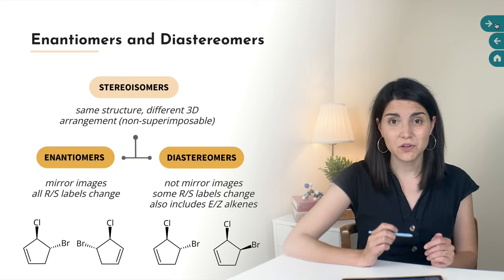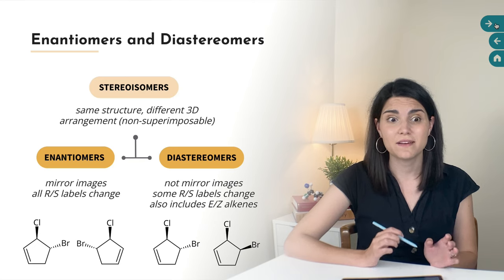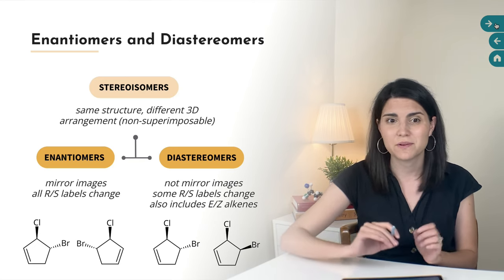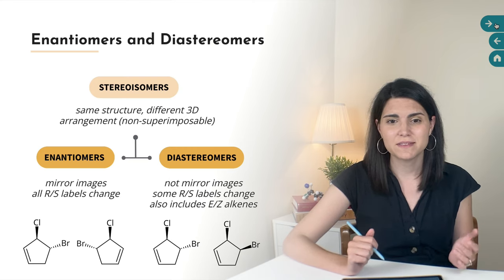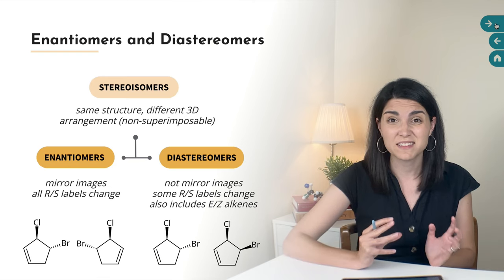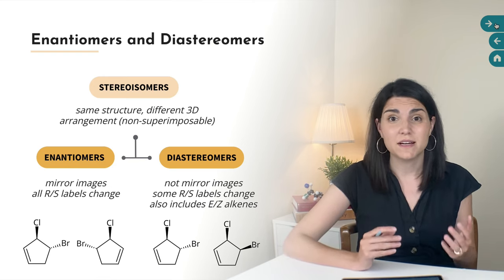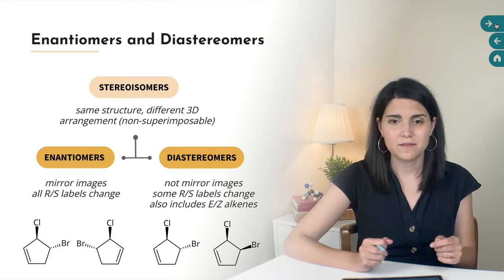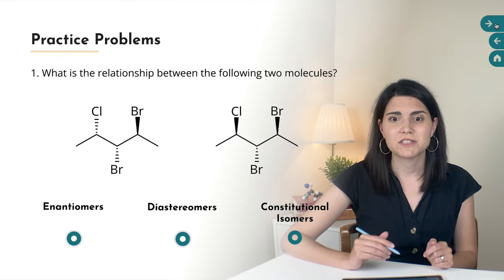A key skill that you're going to need in order to pass organic chemistry is to be able to identify these relationships really quickly so you can burn through those multiple choice questions. A really common type of multiple choice question on your exams is to give you two molecules and ask you to choose the relationship between them — are they enantiomers, are they diastereomers, or are they constitutional isomers like we saw at the beginning of the video? Let's do some practice identifying some of those relationships.